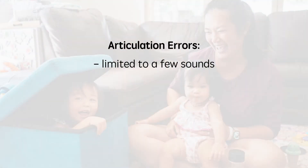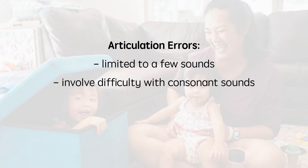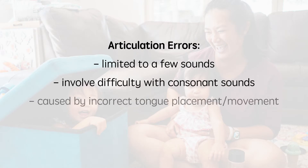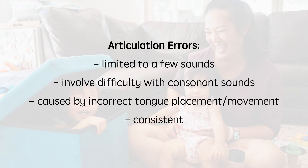Speech-language pathologists usually say that a child needs articulation treatment if their errors are only limited to a few sounds. These articulation errors involve consonant sounds, typically incorrect placement and or movement of the tongue, and the errors are consistent. One commonly treated articulation error that most people know of is lisping.